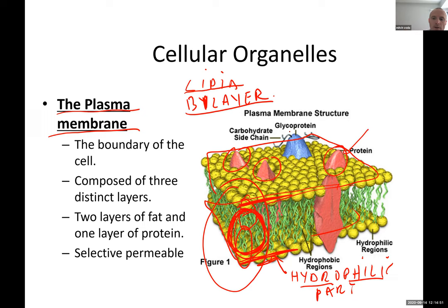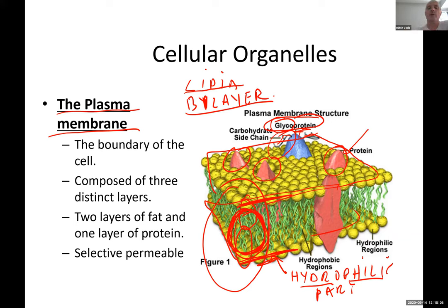Also, right here you have hair-like structures sticking out from the proteins. These are called glycoproteins because they are made up of a carbohydrate plus the protein. These glycoproteins — these hair-like structures — are involved in cell signaling.